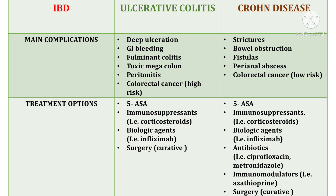Now let's talk about the treatment options. Patients with ulcerative colitis are generally treated with 5-ASA, that is 5-aminosalicylic acid, also known as mesalazine and mesalamine. Also immunosuppressants like corticosteroids, biologic agents like infliximab, and surgery — and surgery is curative in the case of ulcerative colitis.